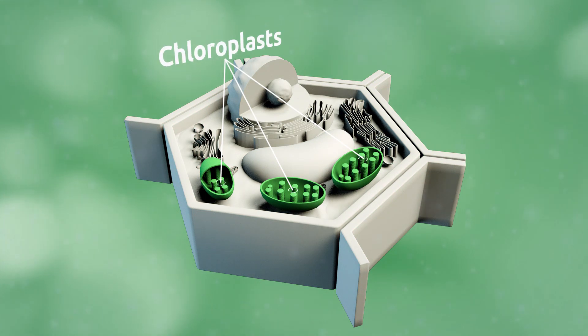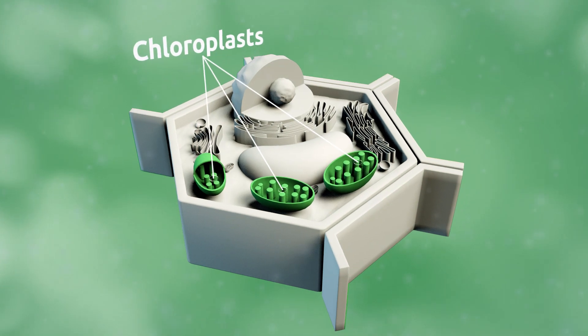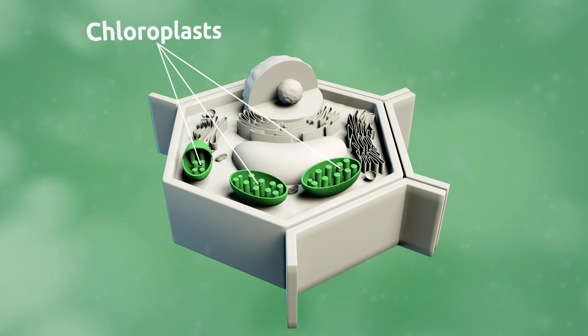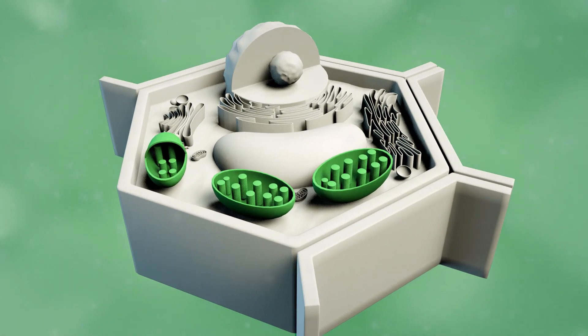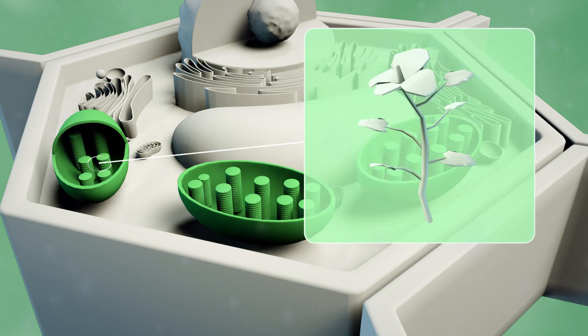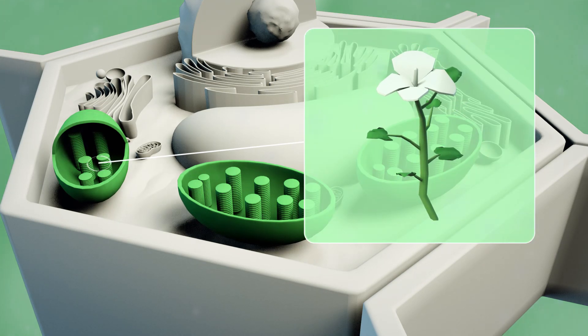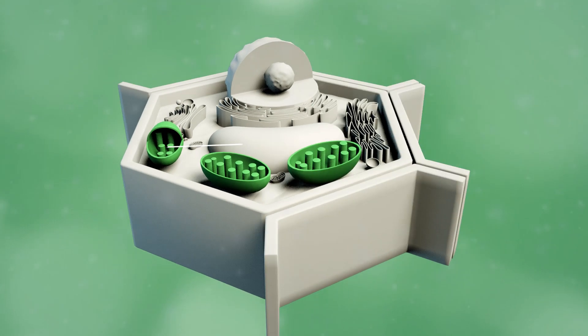Chloroplasts are the organelles which produce and store chemical components essential to the cell. For example, chlorophyll, which gives plants their green color, is stored in the chloroplasts.